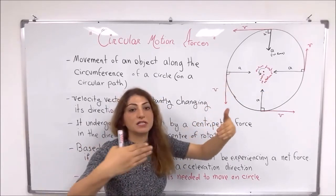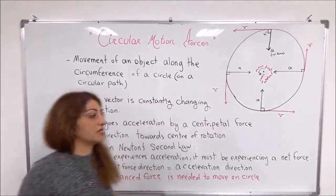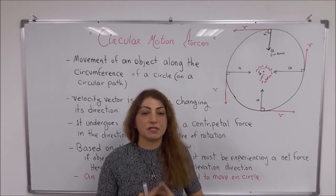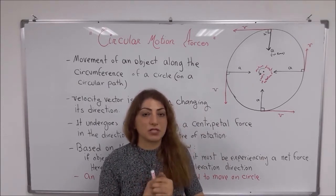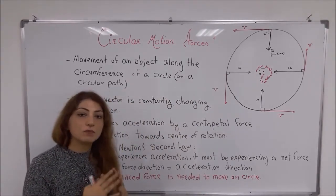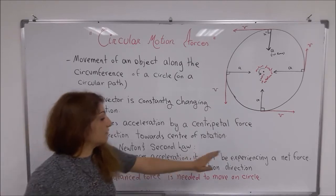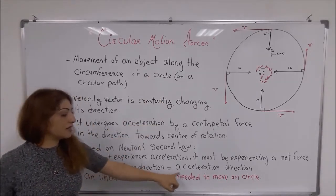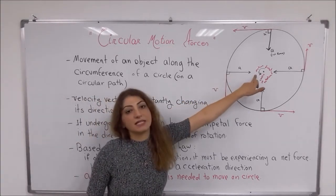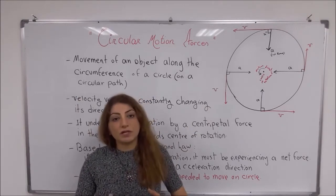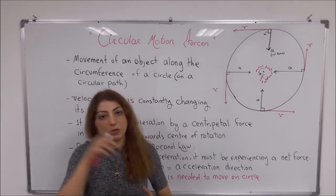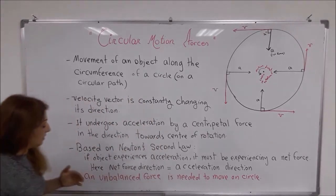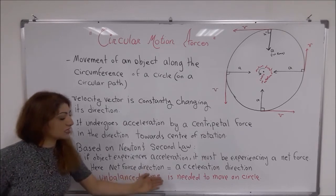The acceleration vector is often pointing inside the circle, towards the center of rotation. Based on Newton's second law, if objects are experiencing an acceleration, they also must be experiencing a net force. The net force is in the same direction as the direction of the acceleration — it is towards the center of the circle. In order for objects to move on a circular path, there should be an unbalanced force acting on that object.